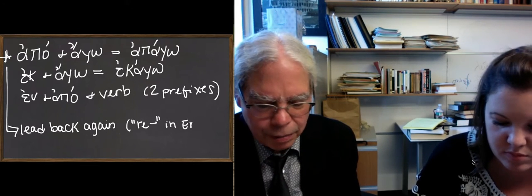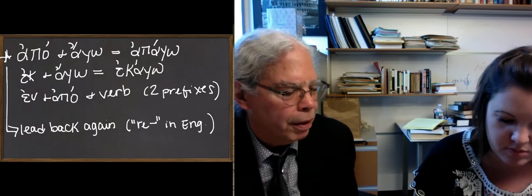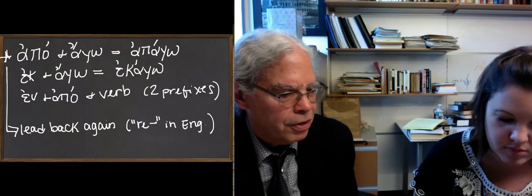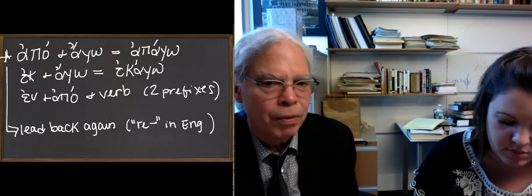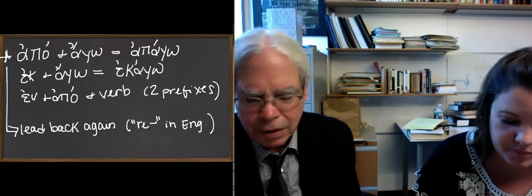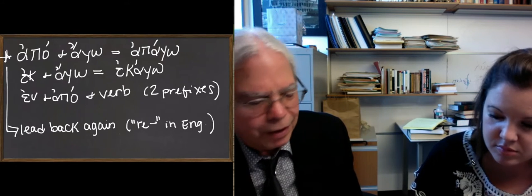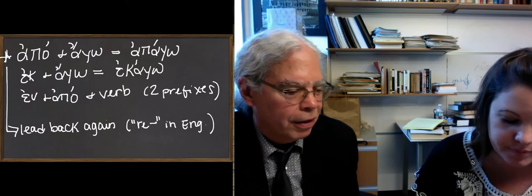So the book is going to teach you now, now that you've learned apo, ek, and eis as prepositions, it's going to teach you what apo and ek mean when they're compounded with verbs. So for example, in this lesson, they tell you that apo means away from. They've left out that it also means back, but you can add that in.